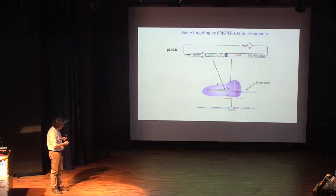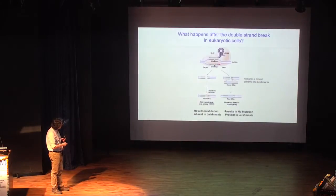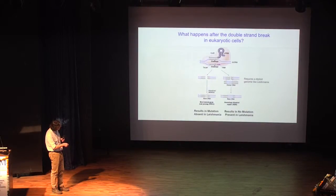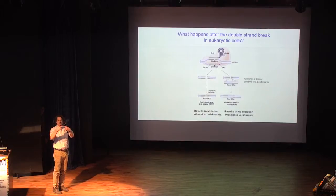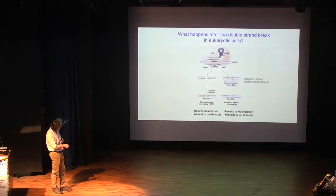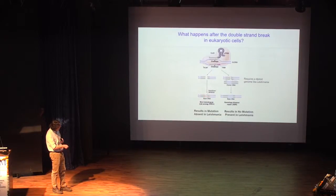What's known about eukaryote DNA repair is basically summarized here. Whenever you cut a genome, there are two major mechanisms in which the genome is repaired. The first one is non-homologous end joining — when you cut, it just attaches the genome back together, but when it does, it either deletes several nucleotides or adds them back. Leishmania doesn't have this. Evolutionarily, it's never had it or has lost it.